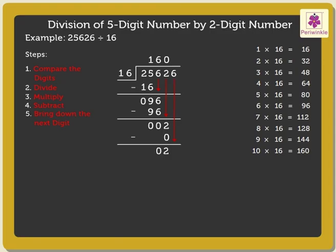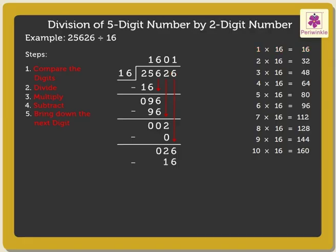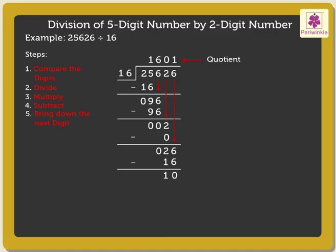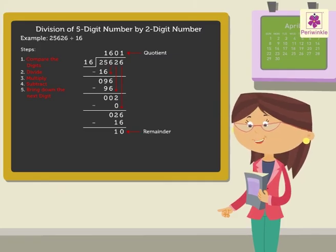Now, bring down the next digit, that is, six. Compare twenty-six and sixteen. Twenty-six is greater than sixteen, so we can divide twenty-six by sixteen. The nearest product is sixteen, so we write one in the quotient above the six. Subtract sixteen from twenty-six, which is equal to ten. Here, the quotient is one thousand six hundred one and the remainder is ten. Wasn't it fun learning division of four- and five-digit numbers by a two-digit number?